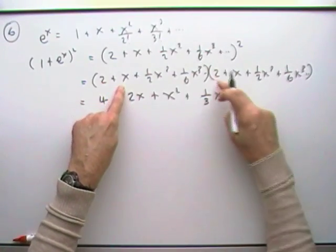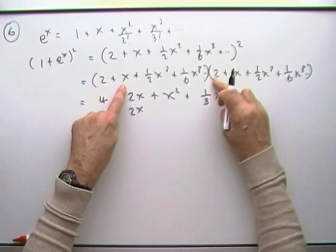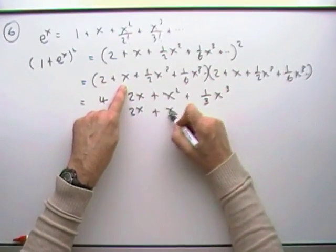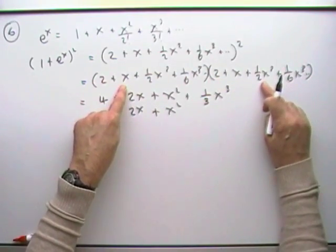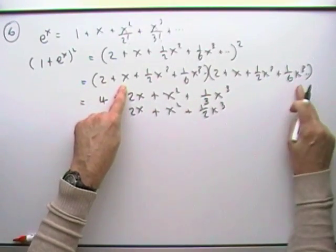x multiplying, so that's going to give me, I think I'll just put it underneath. x multiplying is going to give me a 2x plus an x squared plus a half x cubed. And that's as far as it'll go, I'm not going to take x to the 4.